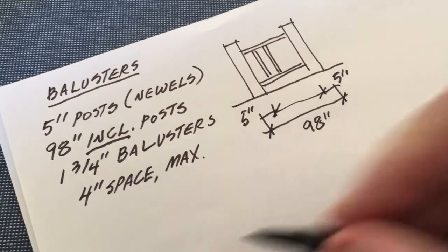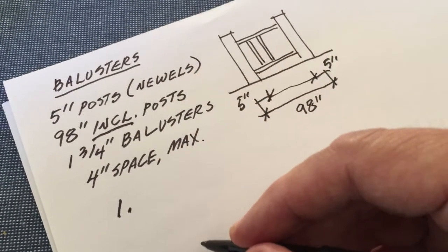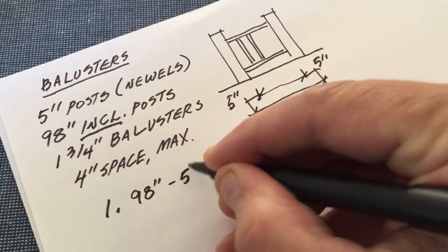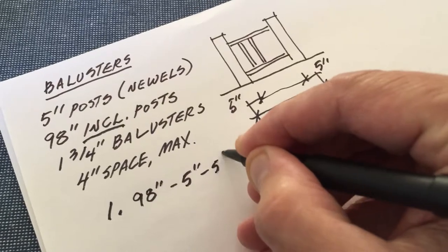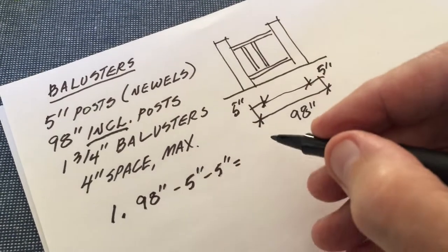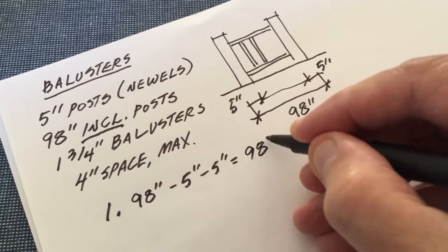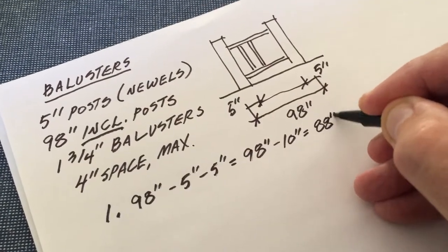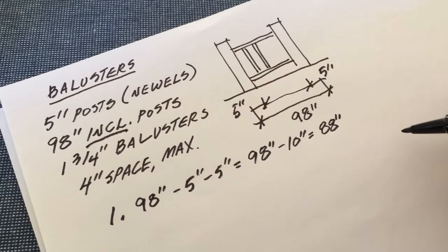Step one: what's the distance between the posts? 98 minus 5 minus 5 equals 98 minus 10 inches which equals 88 inches. That's my clear dimension.